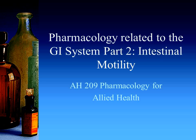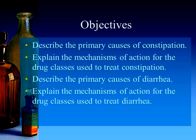Part 2 of our lecture for the GI system is going to relate to medications that deal with intestinal motility — how things move through the intestines. Our objectives for this unit are that you should be able to tell me what causes constipation, what causes diarrhea, and then explain the medications we use to treat each.